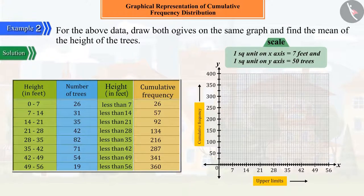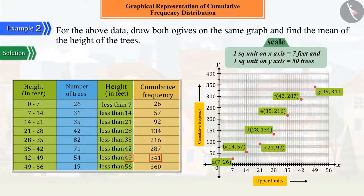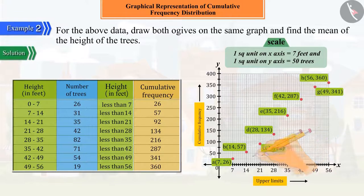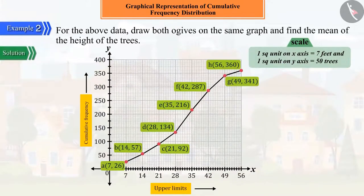Let us now plot the corresponding points of ordered pairs a, b, c, d, e, f, g, and h obtained from the upper limits and corresponding cumulative frequencies, and join them carefully, from which we get a curve which is the less-than type of ogive.